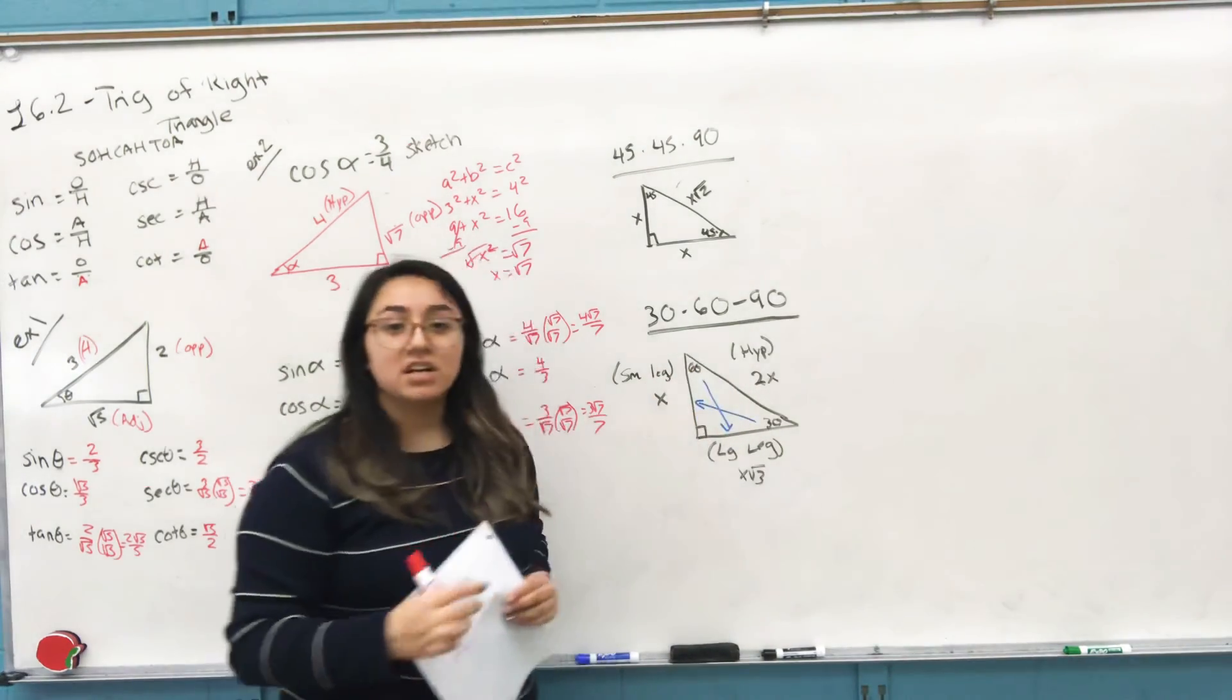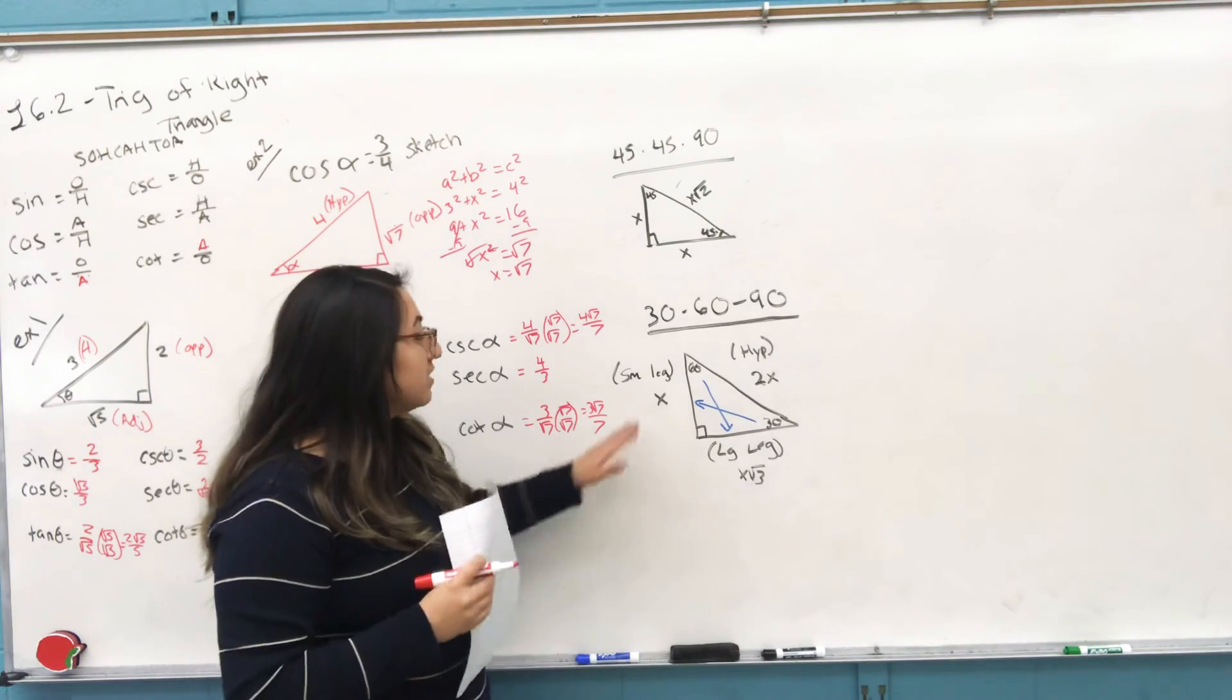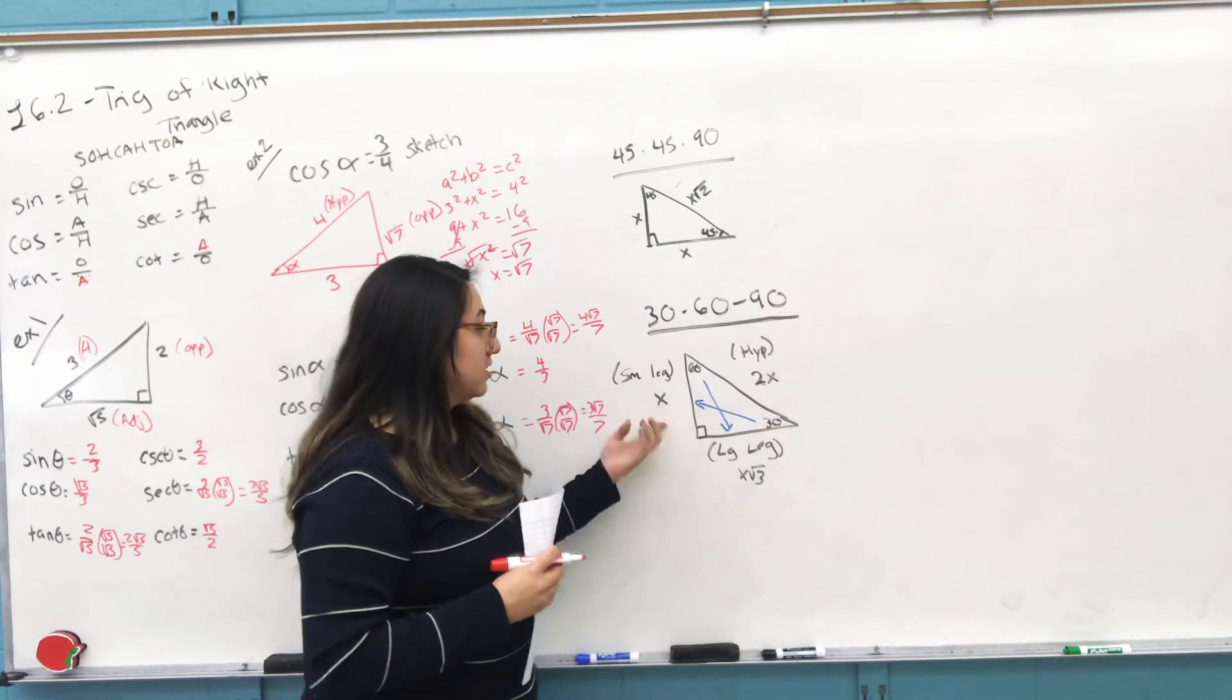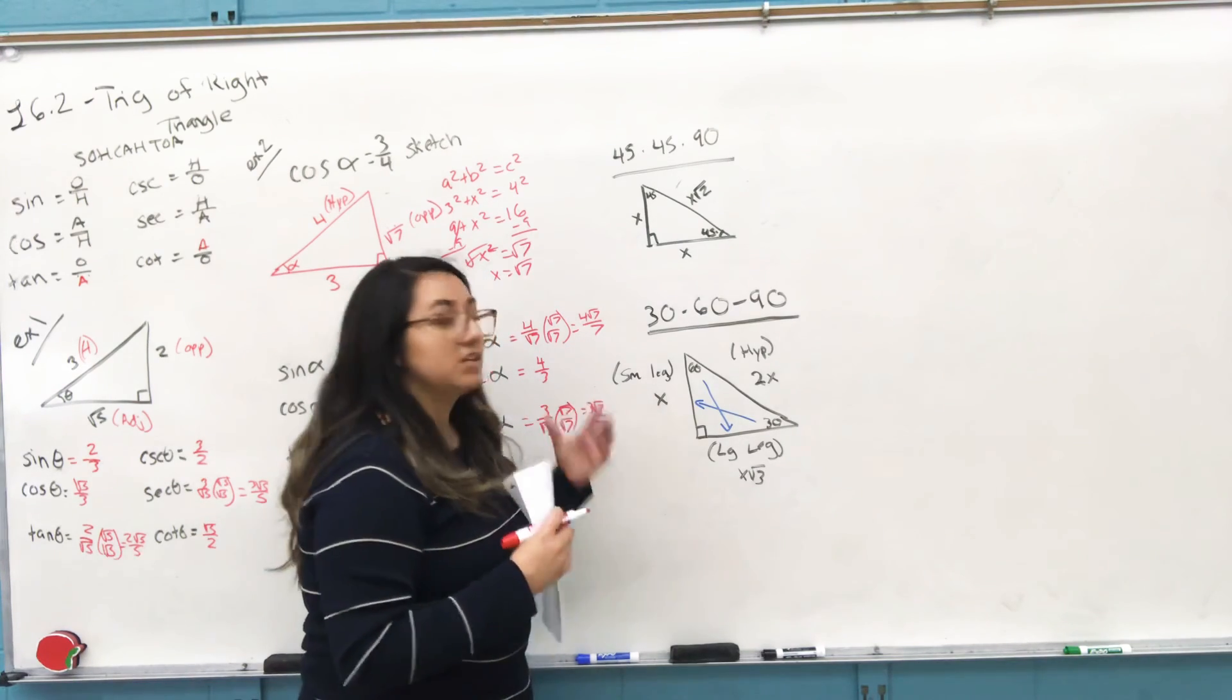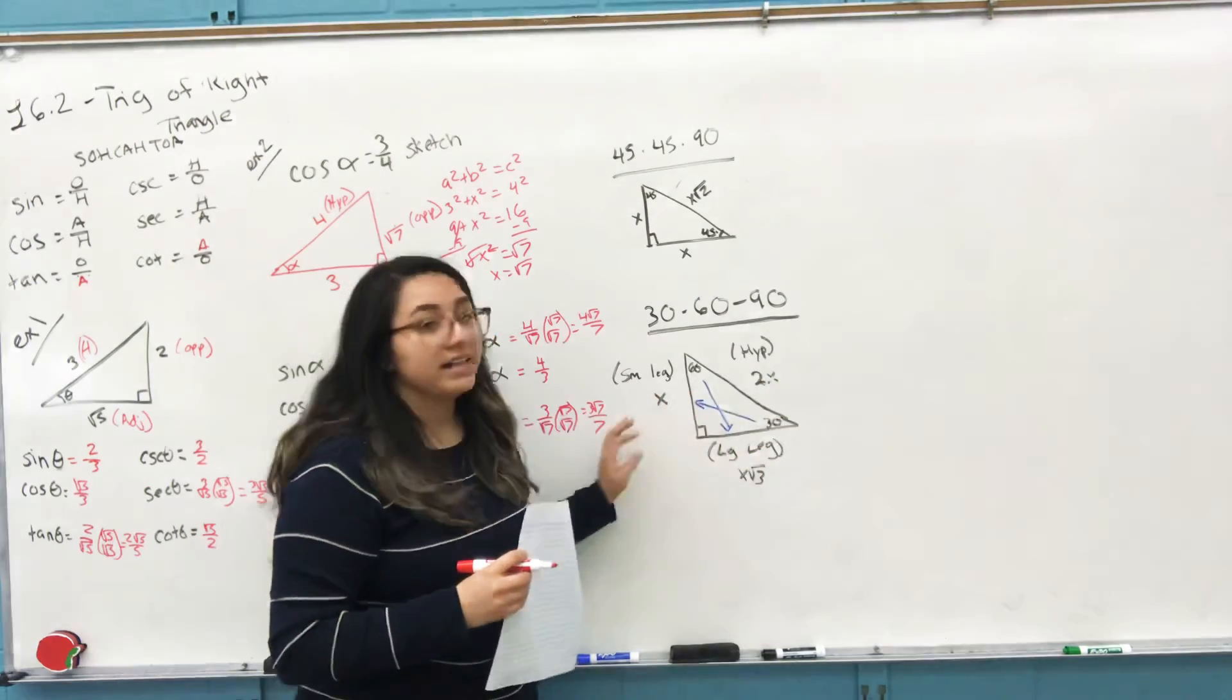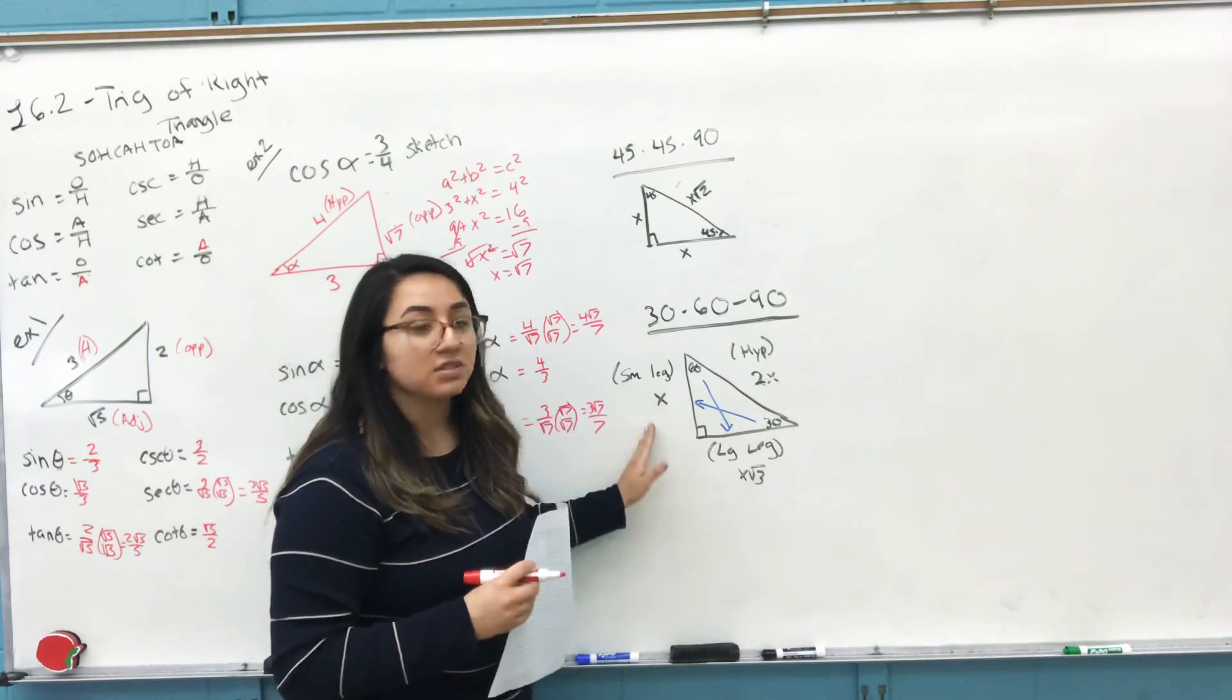And then the key phrase here again is small leg. I have x here, but you need to find what the small leg is. If you don't have a small leg, you have to use these types of formulas to find that small leg. But you have to look for that leg first.